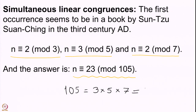In general, this product will be replaced by the LCM of these three numbers. At the moment, since these three numbers are pairwise coprime, their LCM is nothing but their product. But when we see the general theory a couple of lectures later, the product will be replaced by the LCM.